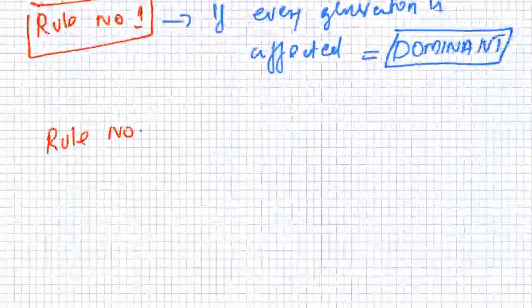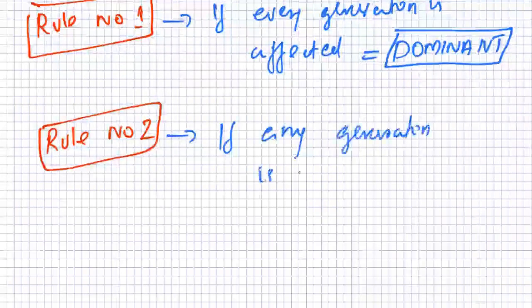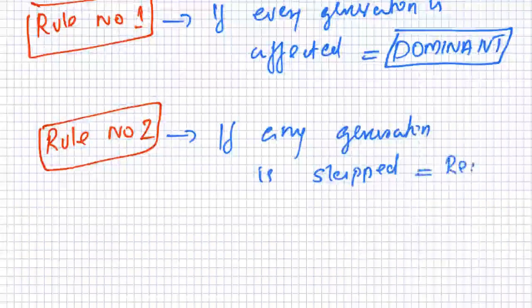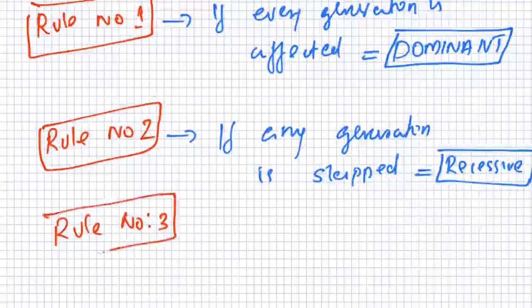Rule number two: if any generation is skipped and is not affected, that means it is a recessive character. So if everyone is affected, that is dominant; if one generation is not affected, it is recessive.